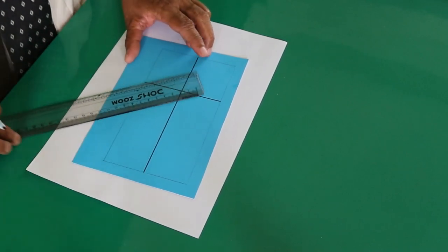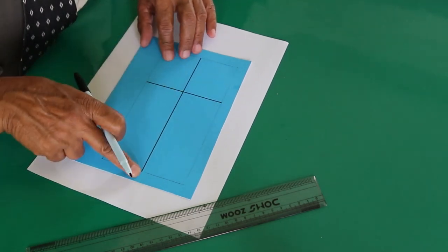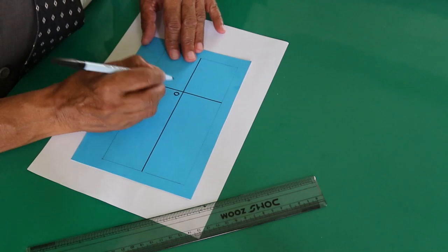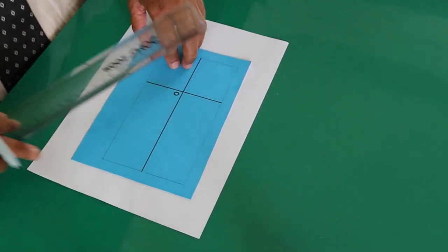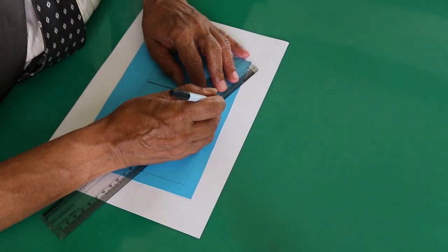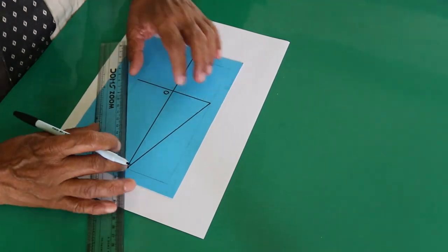Here you have to draw in a way that this line must bisect this perpendicularly at this point. Let's say that point is O. Now draw the kite this way by joining these vertices in order.